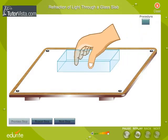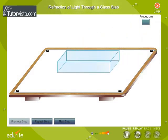Place a rectangular glass slab on a white sheet of paper fixed on a drawing board. Trace the boundary ABCD of the glass slab.